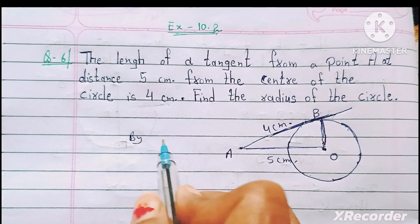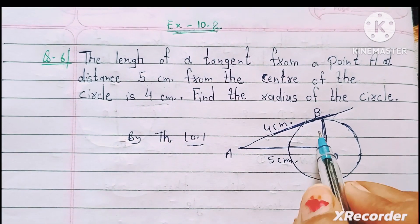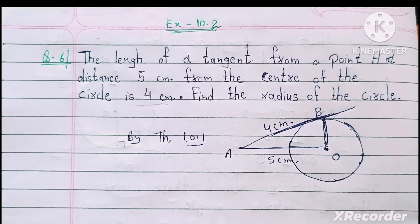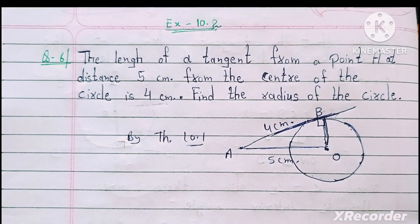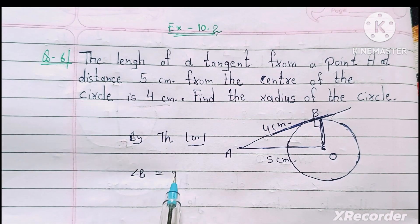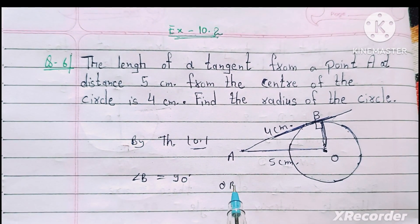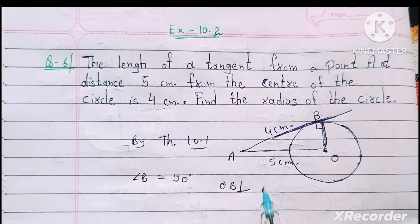You know theorem 10.1. By theorem 10.1, angle B is 90 degree. OB perpendicular AB.